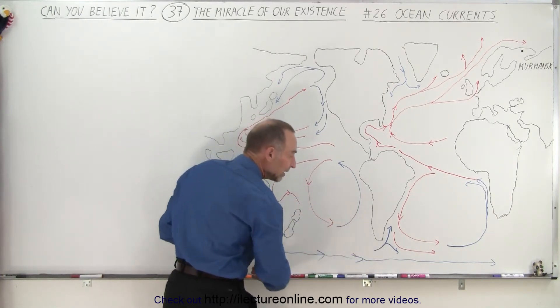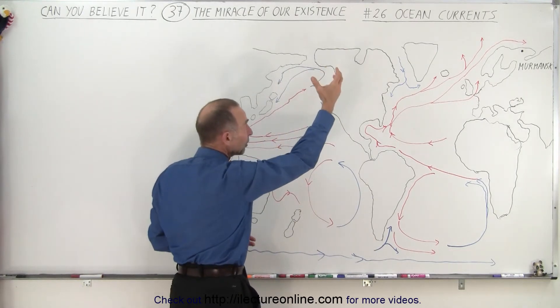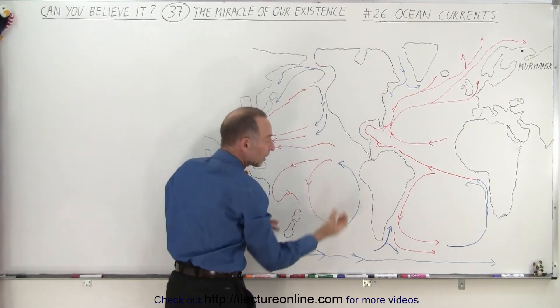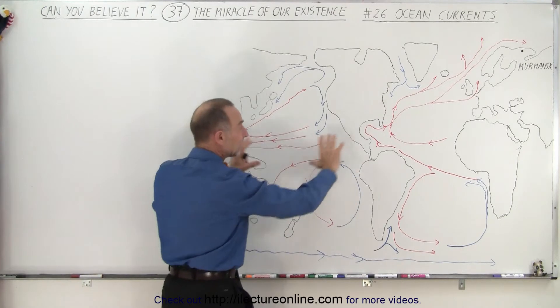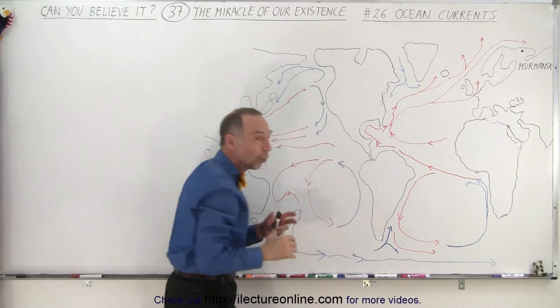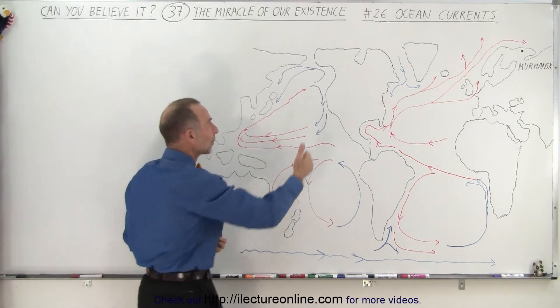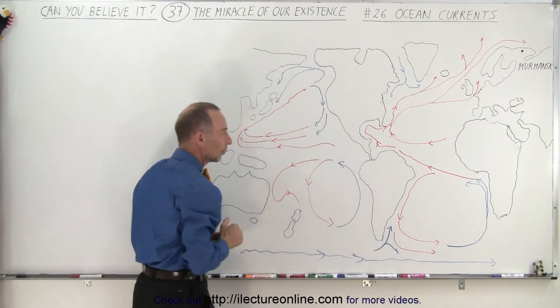Because of that, we alleviate the coldness of the Antarctic region and the Arctic region by pulling the coldness out of there via these ocean currents, heating them up where it's really hot, and then keeping certain regions of the world relatively cool or a lot cooler than they otherwise would be if it wasn't for these cold ocean currents.